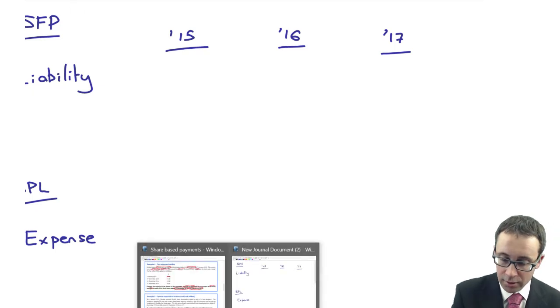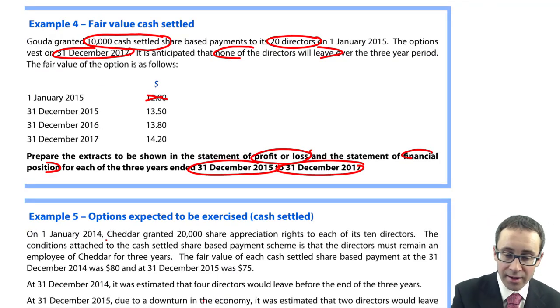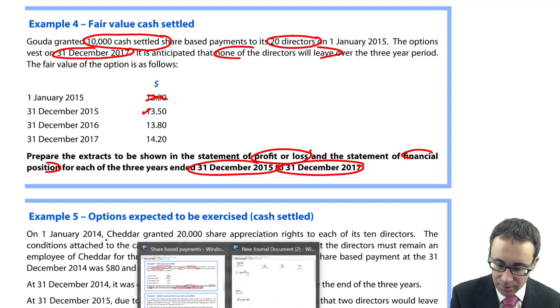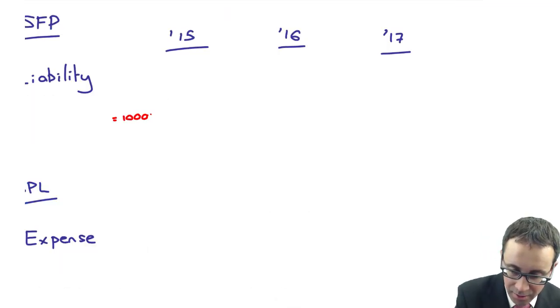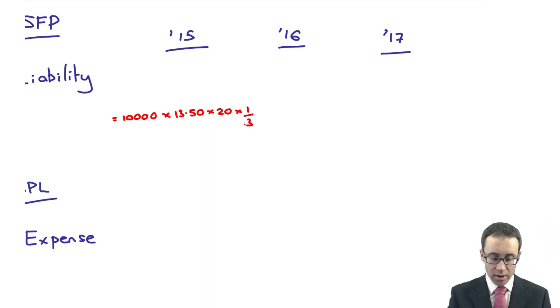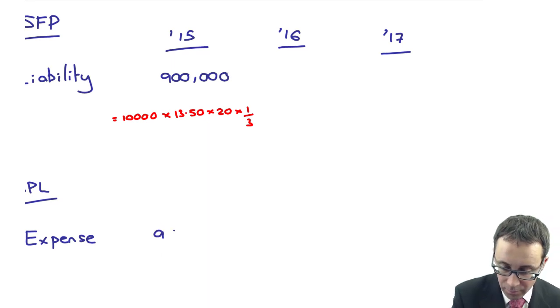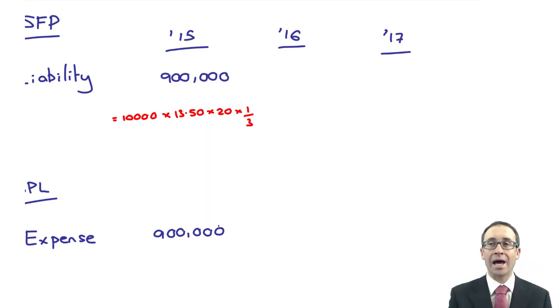In year one, the fair value is $13.50. Here it's $10,000 cash-settled share-based payments, fair value is $13.50, there are 20 directors and we're at the end of year one out of three. Does that give me $900,000 as a liability? The first year of any scheme is never very exciting because you have the expense the same as the liability figure because we've started everything from zero.